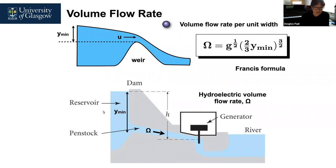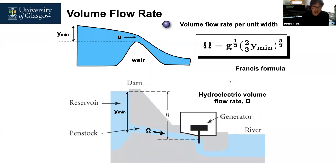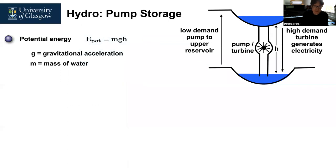For more modern river hydroelectric schemes, you put a dam across a river, and behind it — in a reservoir or fast-flowing river — you have a higher head y-min. The water is held back by the dam, flows through a penstock at a volume flow rate given by the Francis formula, drives a turbine connected to a Faraday generator to produce electricity, and ultimately exits to a lower-elevation body of water.